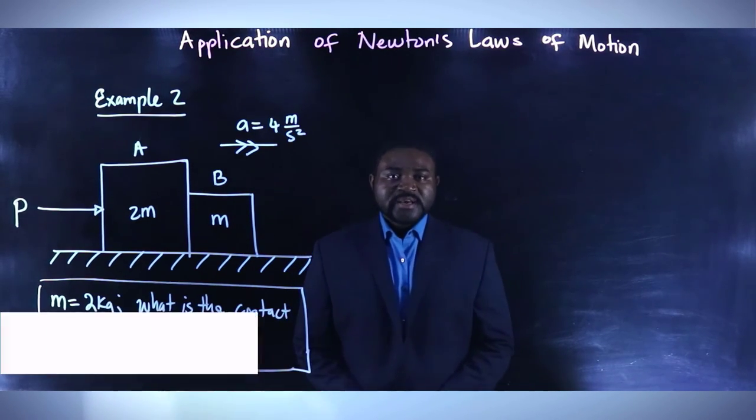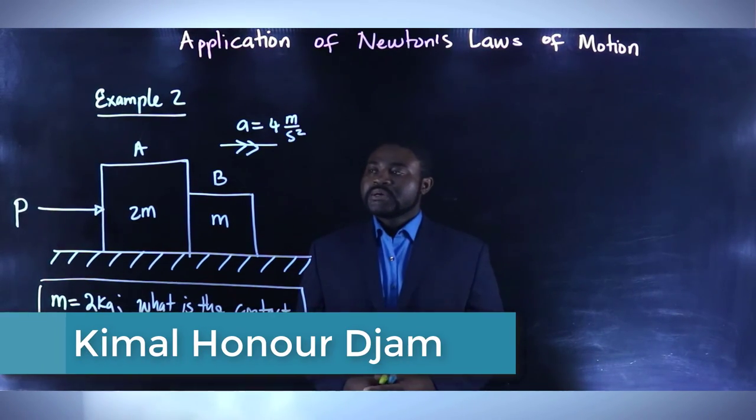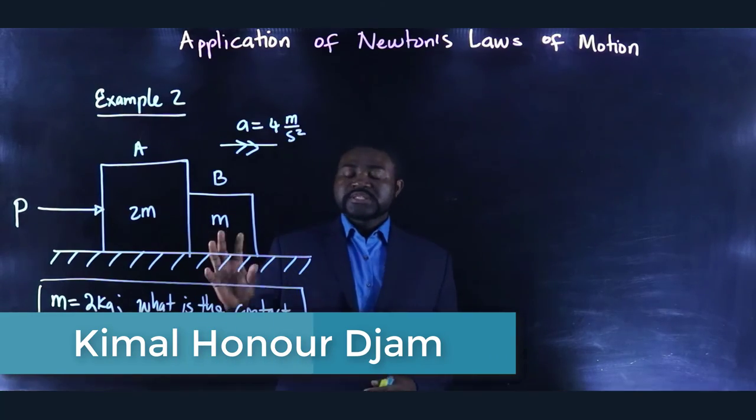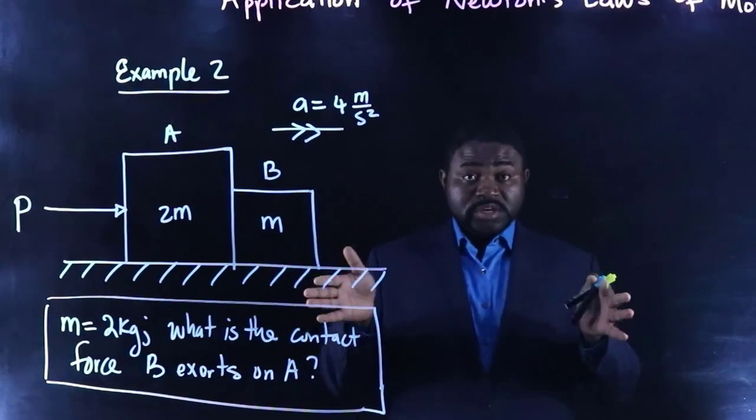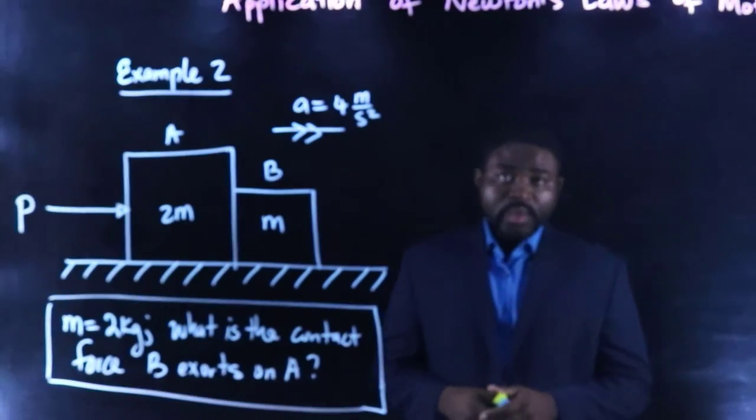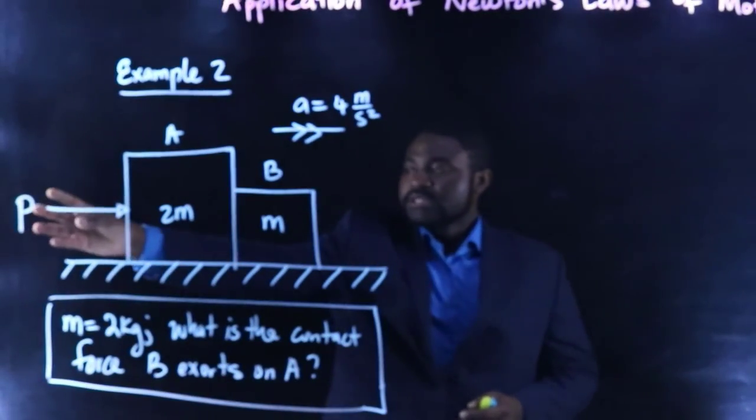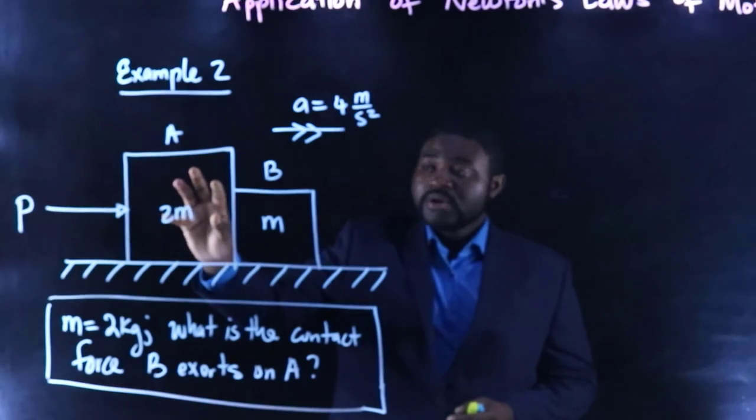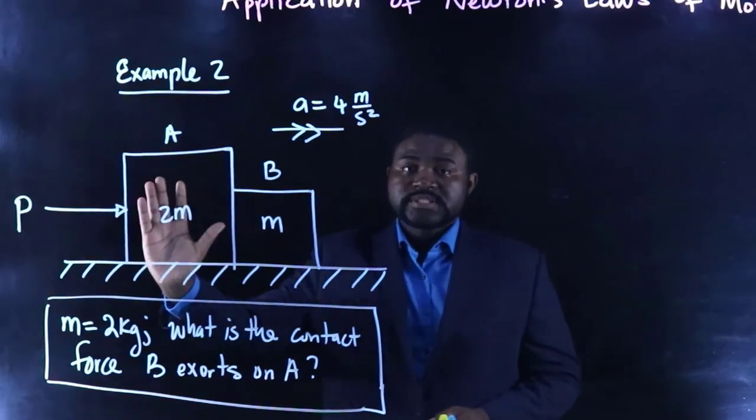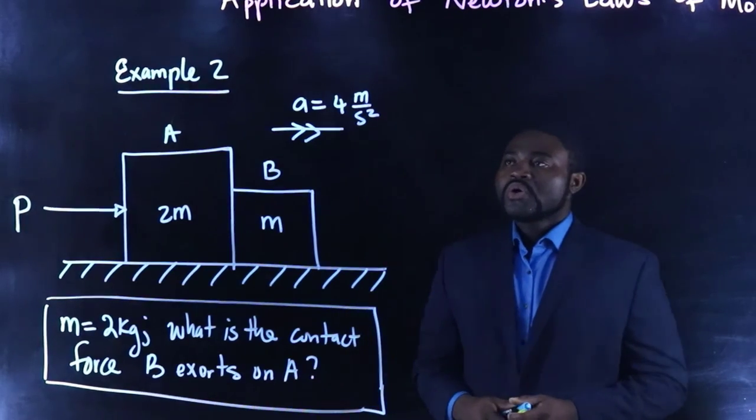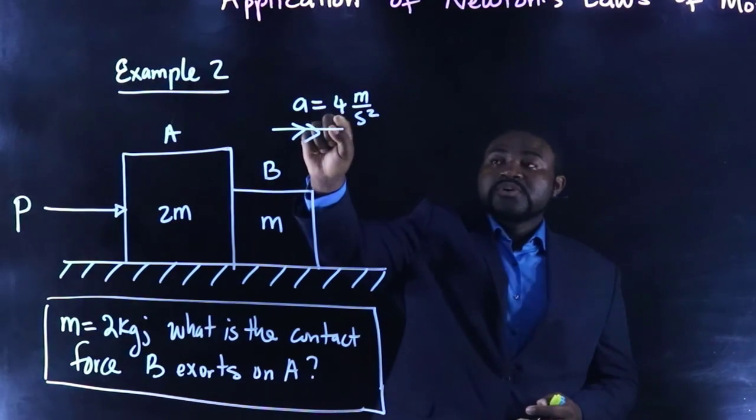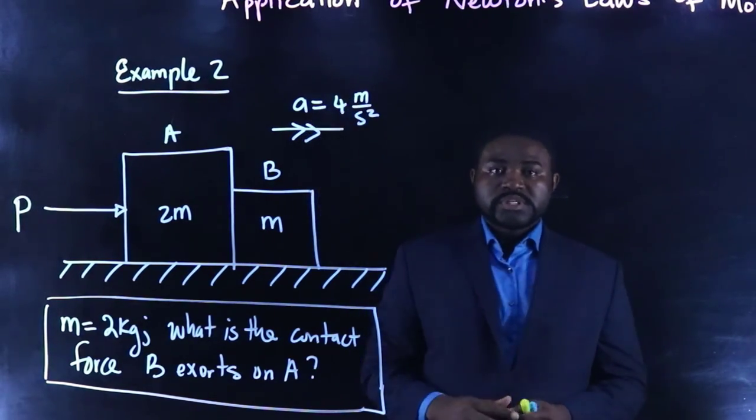Hi, everyone. In this example, we have a system of two blocks, A and B, in contact with each other. And a force is applied to block A, such that the system accelerates to the right, with an acceleration of 4 meters per square second.